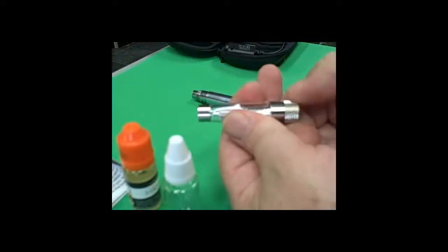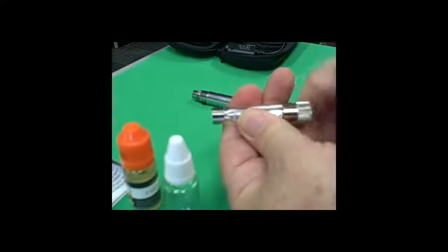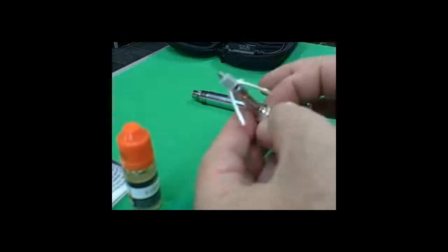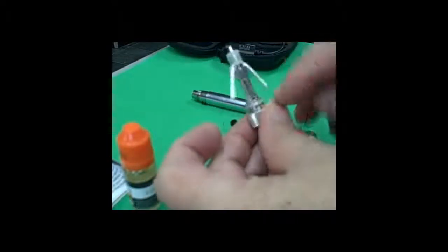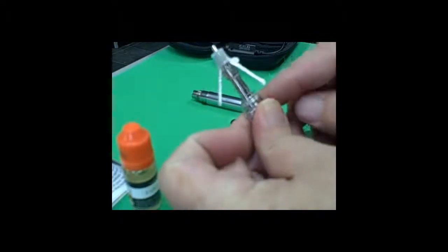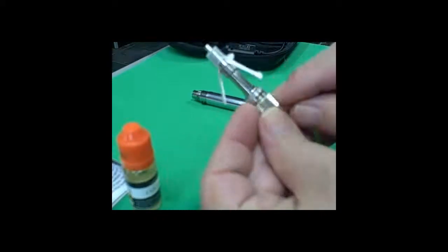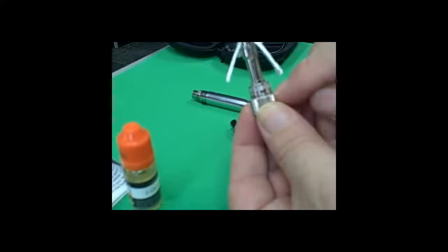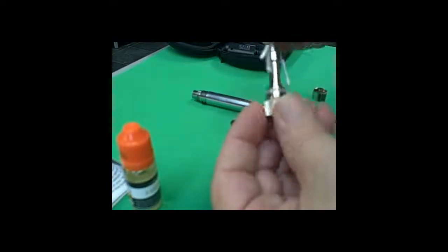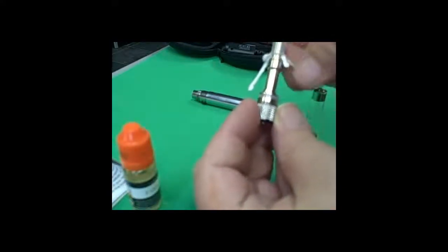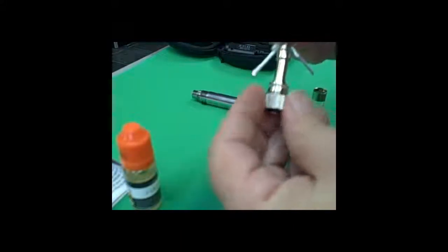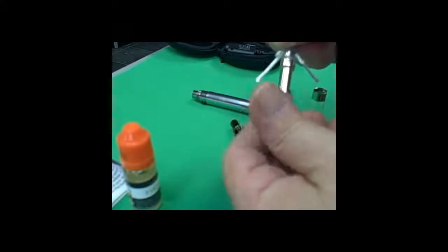Okay. Now, with this particular cartomizer, you can change the coil. And let me explain how this works. You'll, again, notice there's a seal here and a seal here down on the bottom. You always want to be sure that those seals are in place. This top section that has the wicking coming out is your heating coil. And it's just screwed on there finger tight.